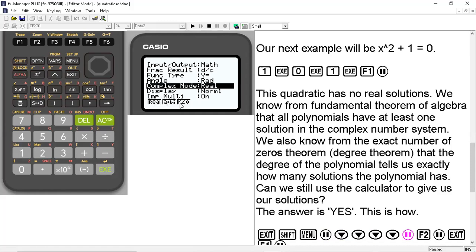This real icon is the display real numbers only. The A + Bi will be the rectangular form of complex numbers, the real part and the imaginary part.